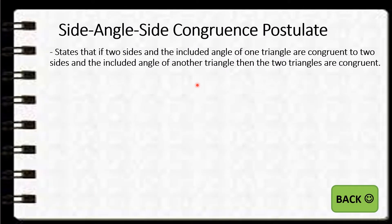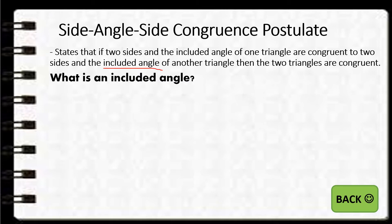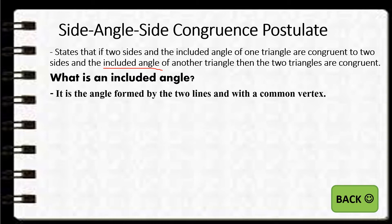So let's have the second postulate, which is the SAS, or the side-angle-side congruence postulate. It states that if two sides and the included angle of one triangle are congruent to two sides and the included angle of another triangle, then the two triangles are congruent. Let's talk about the term 'included angle' — it means the angle formed by two lines with a common vertex.